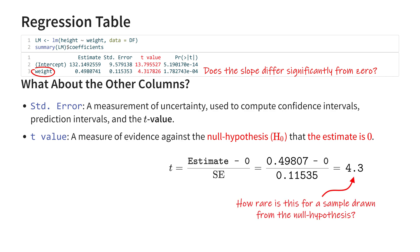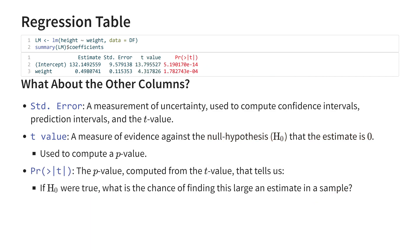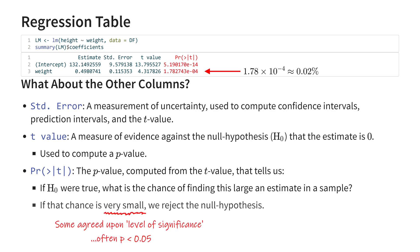So what does that mean? How rare is that under the null hypothesis? That is what the p-value tells you, which is shown in the fourth column. Apparently, if the null hypothesis were true, you'd have a 0.02% chance of drawing a sample with this large a t-value for the slope. That is pretty rare, so maybe this null hypothesis isn't what generated the results. And we say we have a significantly non-zero slope for weight. That is a quick summary of how significance testing works — we'll have a look at it in more depth once we get to the topic of comparisons.